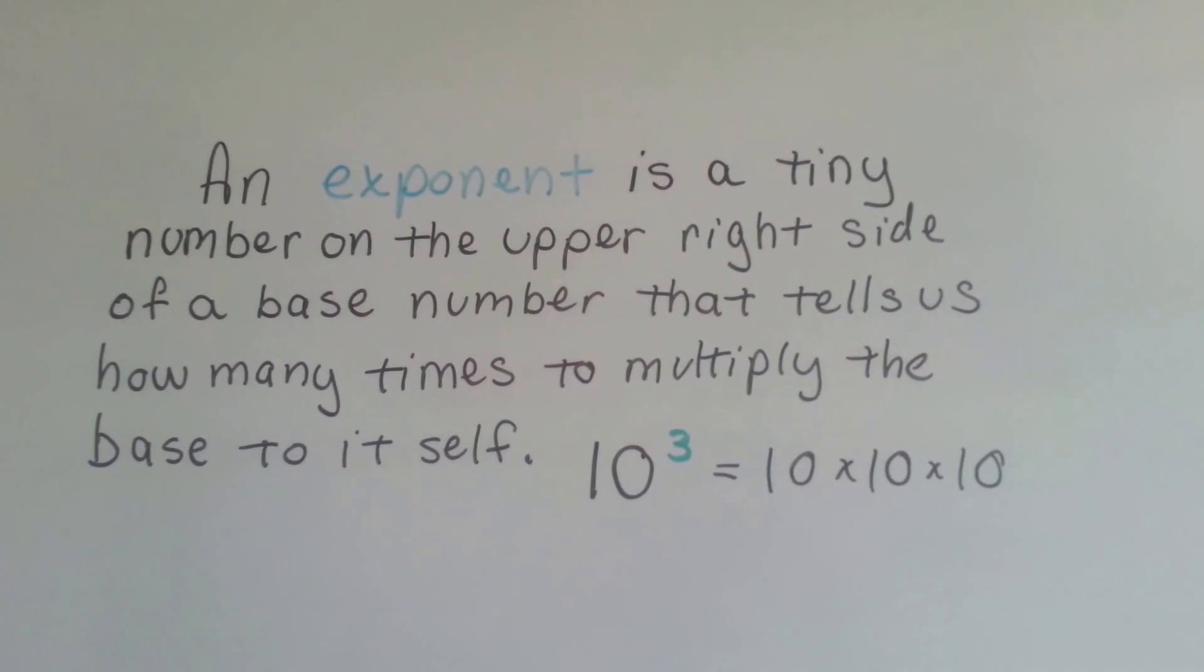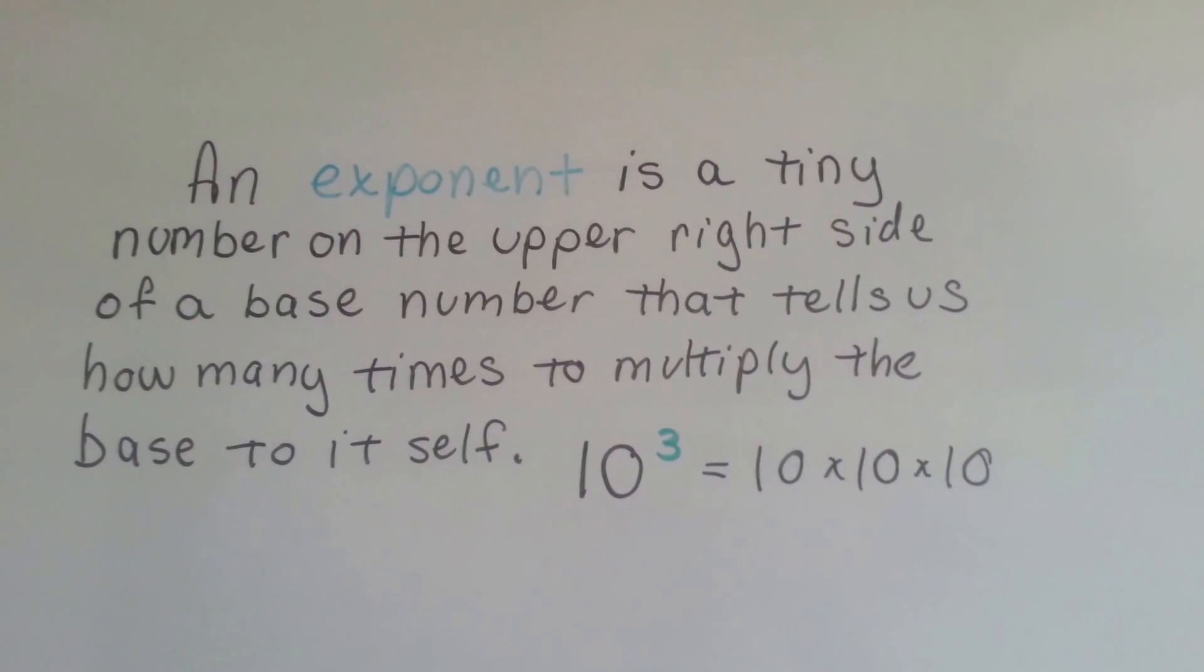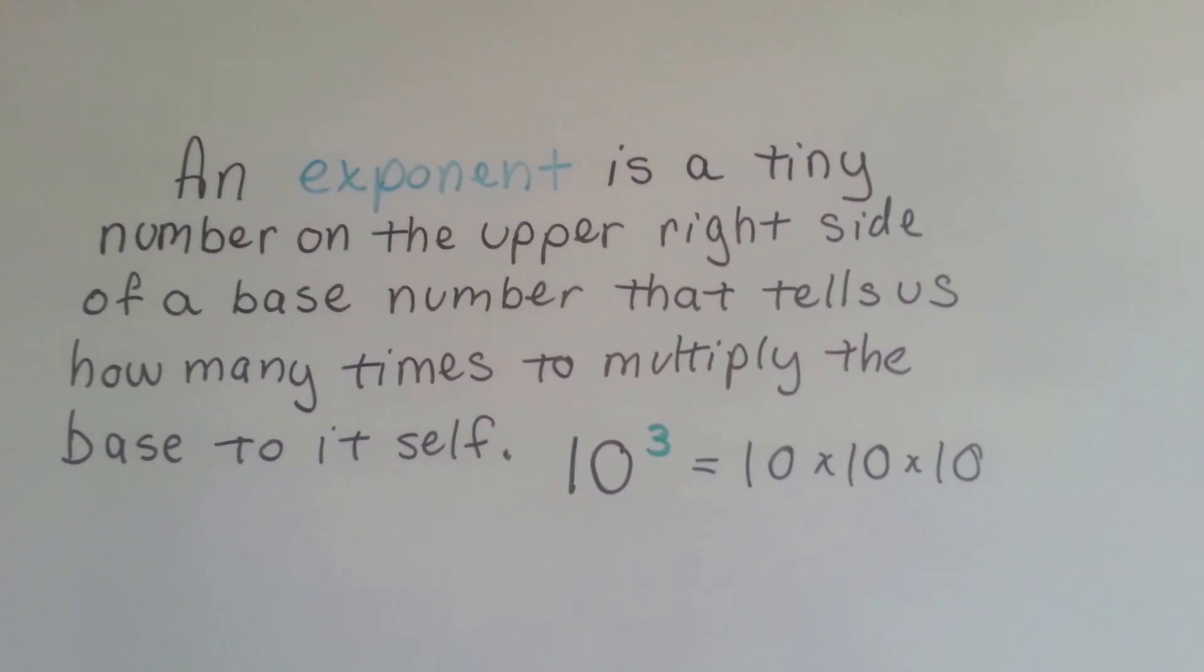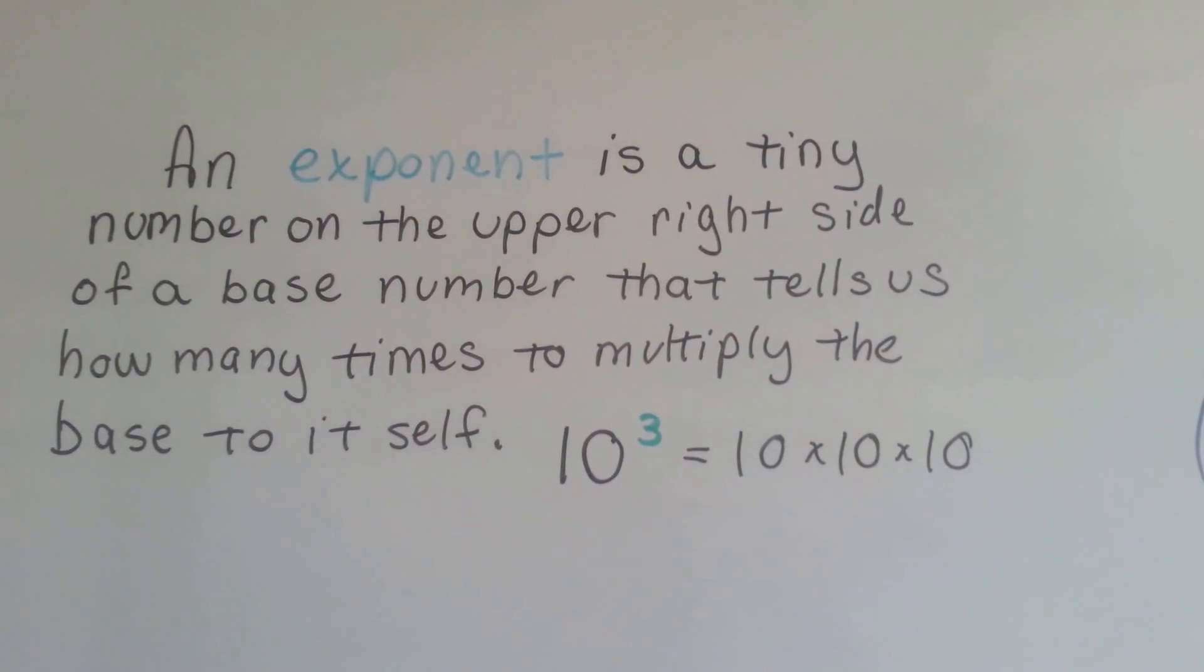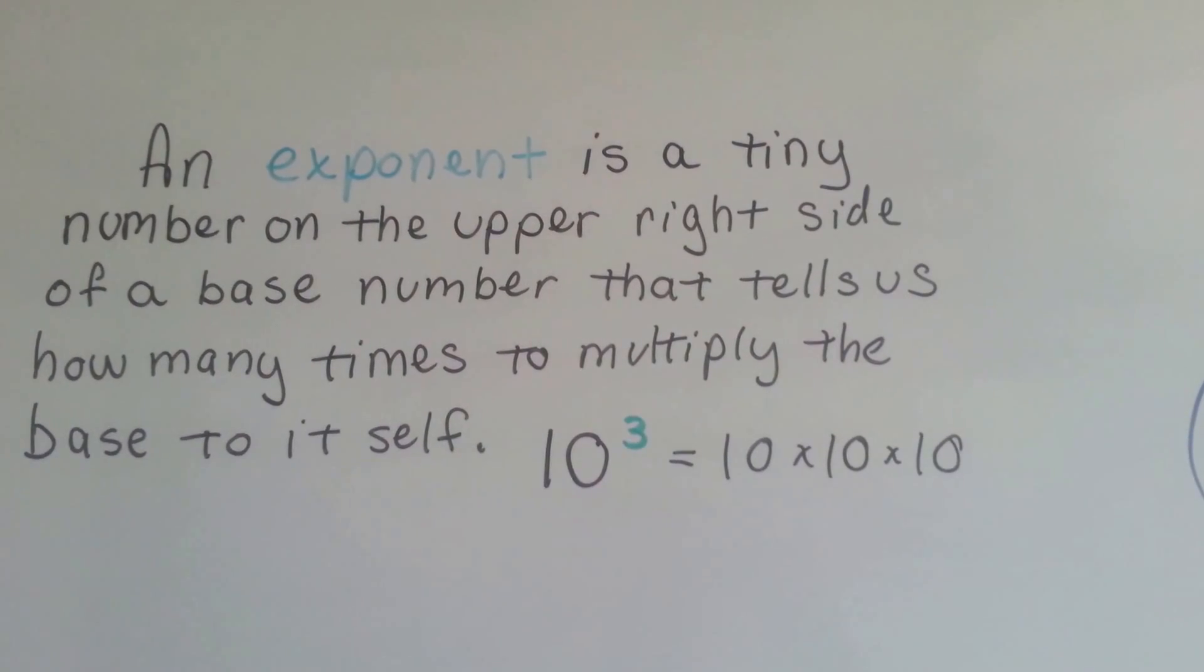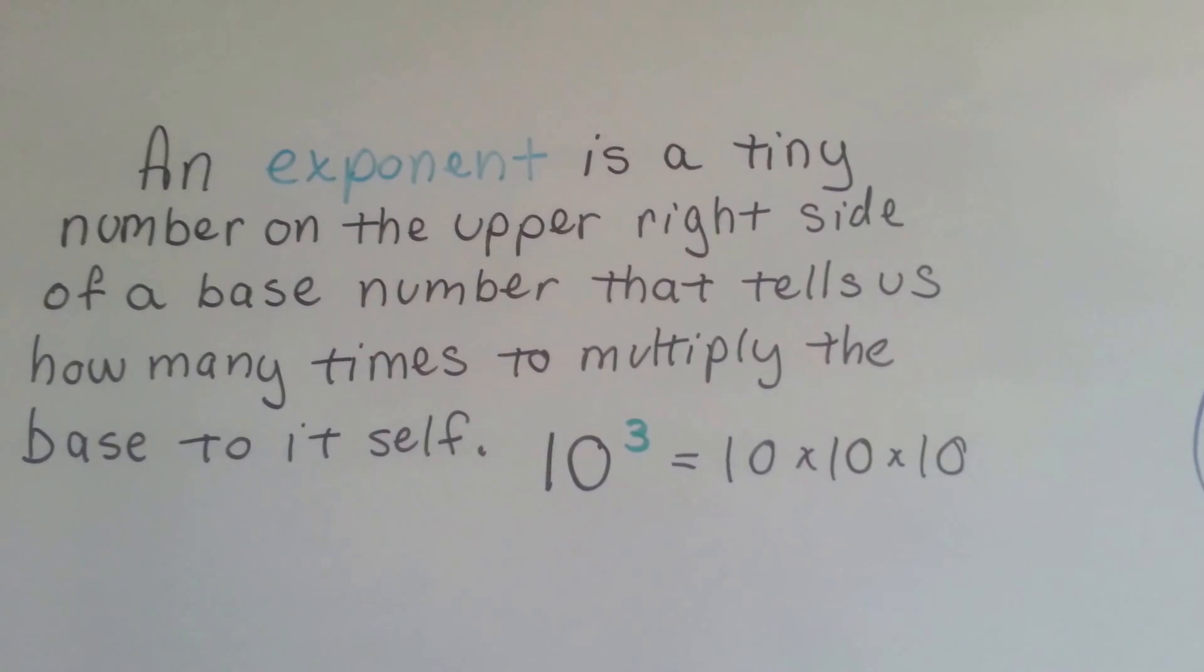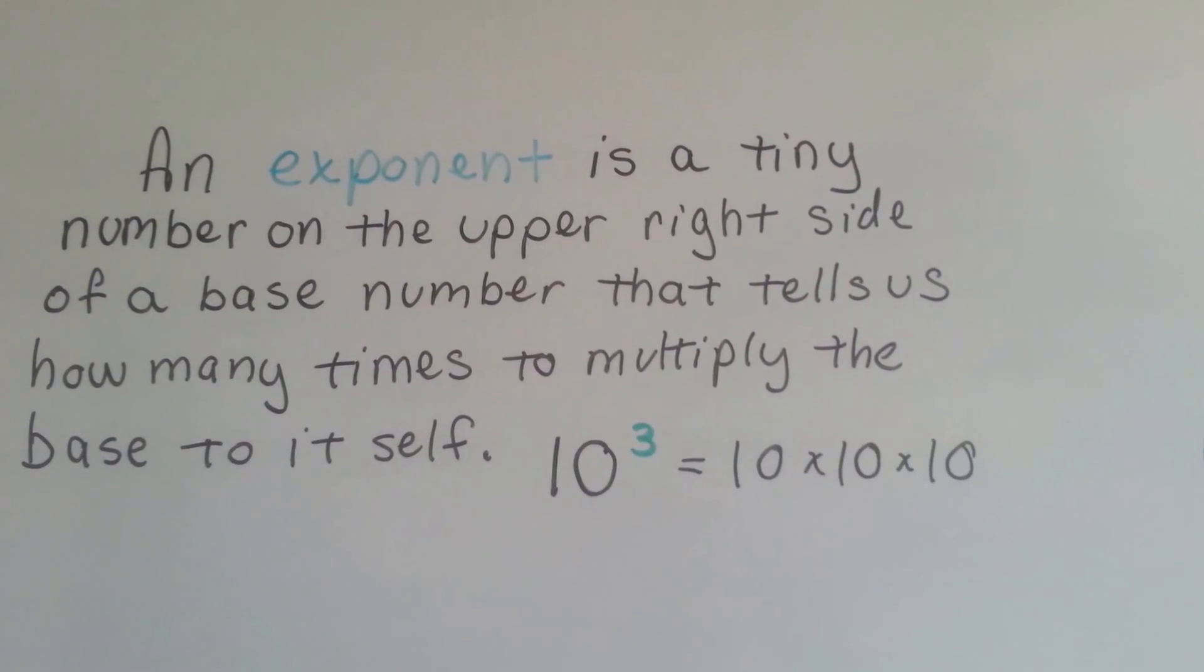An exponent is a tiny number on the upper right-hand side of a base number that tells us how many times to multiply the base to itself. So the 10 is the base and the little 3 is the exponent. It's the power of 10. That means we're going to do 10 times 10 times 10. It's how many times we're going to multiply the base to itself.